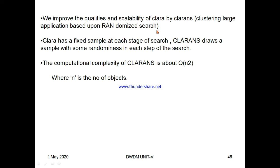We can improve the quality and scalability of clustering large applications based on CLARANS — a randomized search method. CLARA has a fixed sample at each stage of search, while CLARANS draws some randomness at each stage of search. The computational complexity is about O(N²), where N is the number of objects.